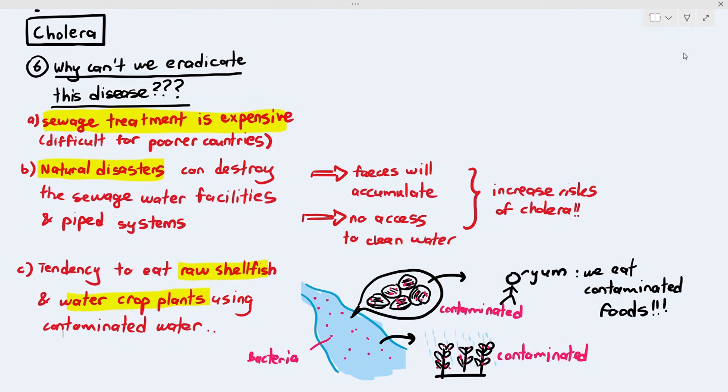Perhaps in the future, when more countries get access to sewage treatment facilities, we get better at treating, we get better at dealing with natural disasters and we reduce our tendency to eat raw shellfish and also water our crop plants using treated water, perhaps then cholera will be totally eradicated. But it's easier said than done. I like sushi. I like to eat raw oysters from time to time if I go for a buffet. So, it's a risk. This is why we cannot totally eradicate the disease as of yet.